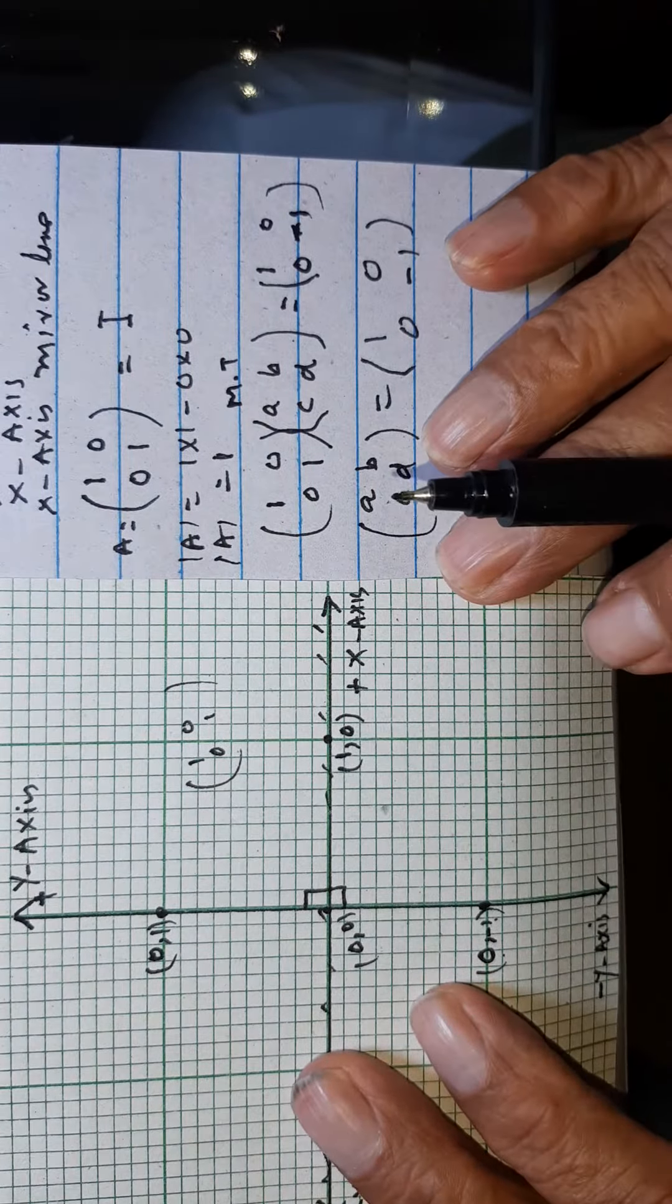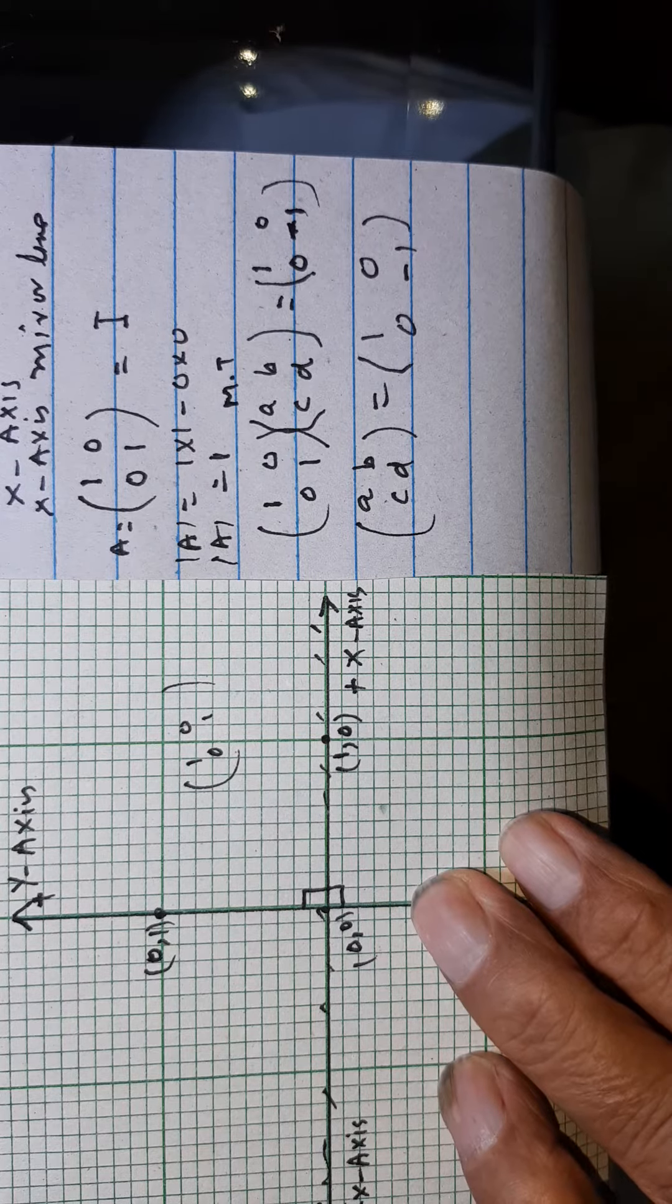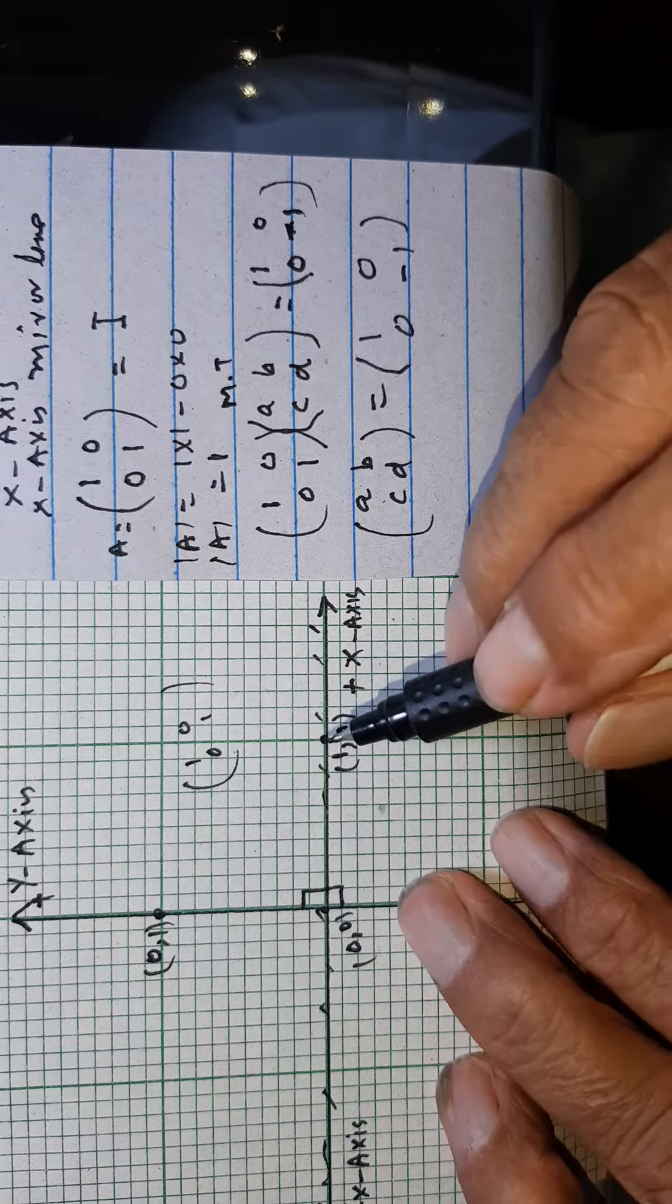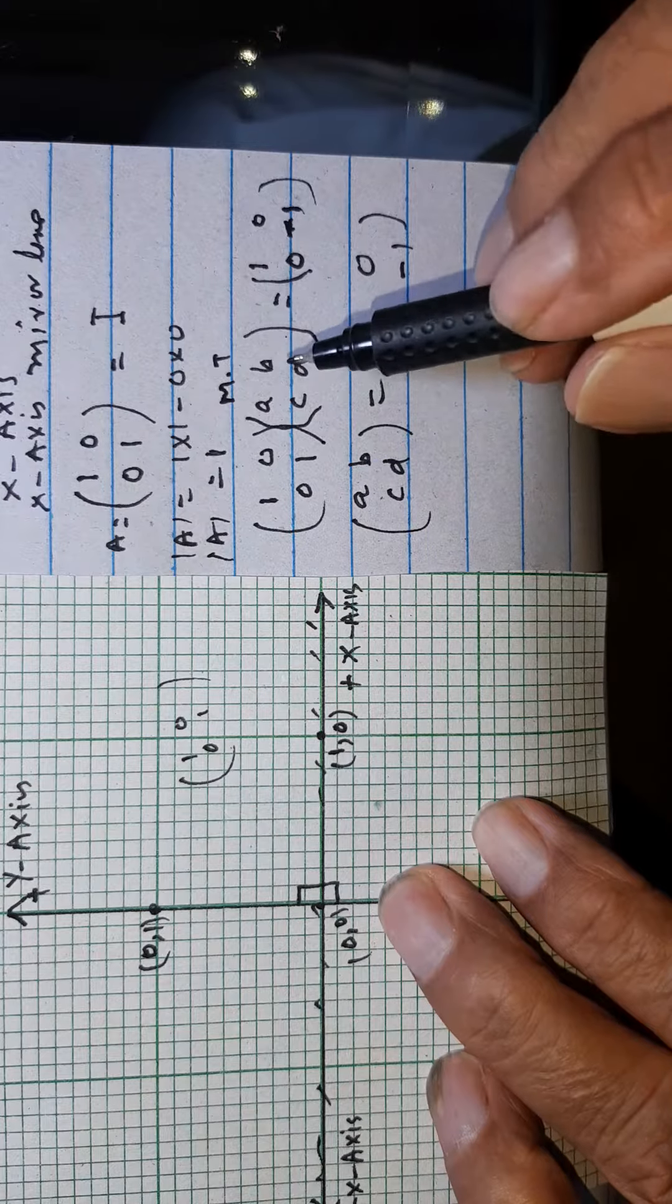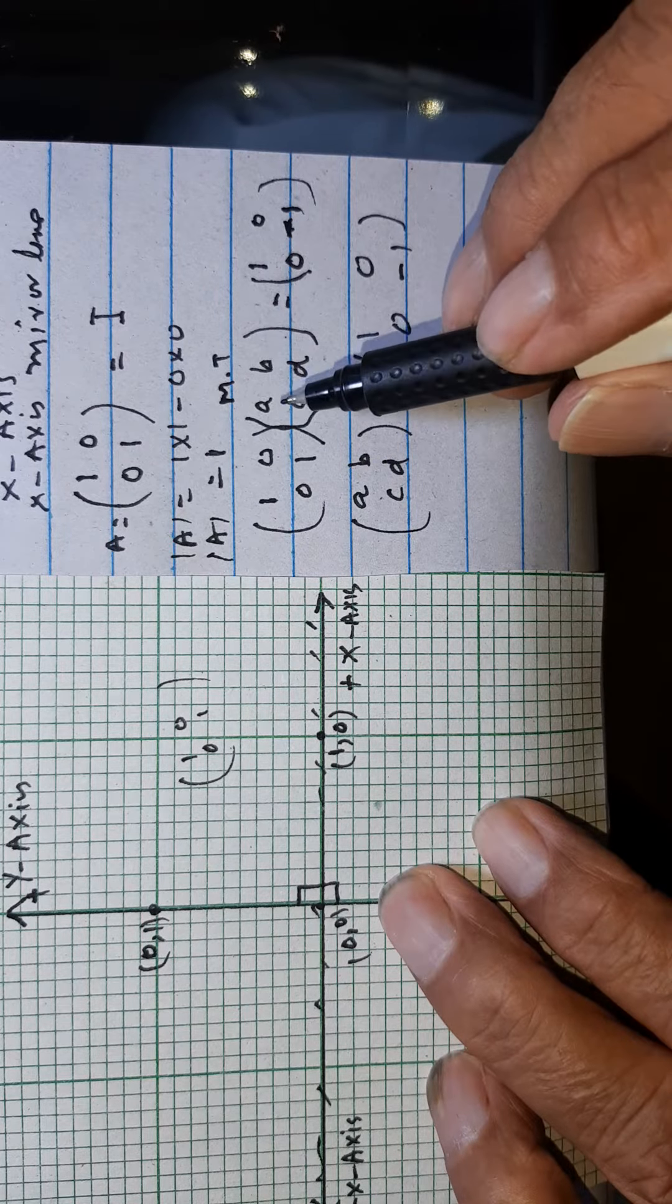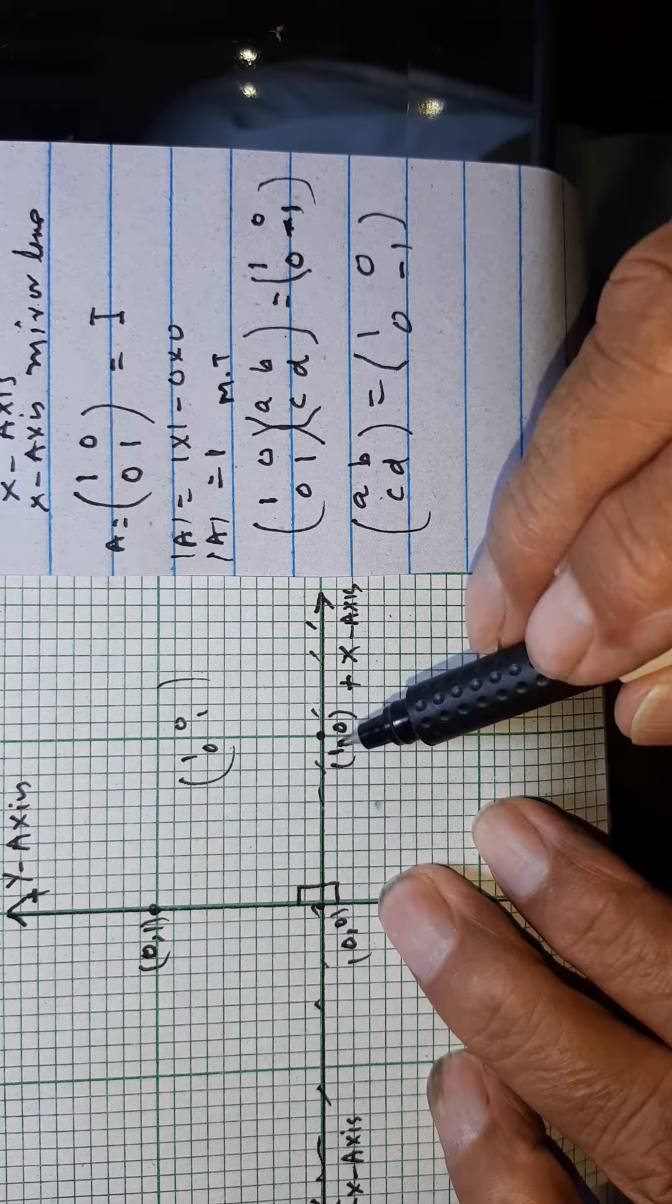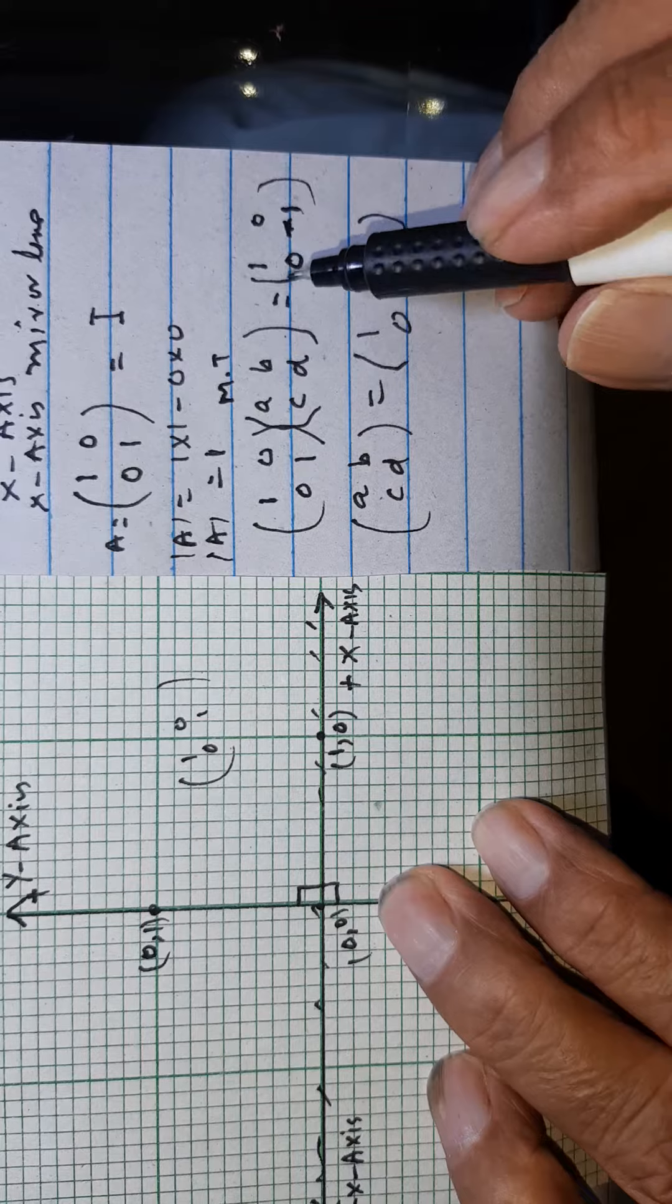That means we take the x-axis as a mirror line. Here 1 0, this is 1 0 and 0 1, these two points. We multiply by the matrix transformation. When x-axis is the mirror line, 1 0 remains as it is 1 0. And here 0 1 comes to, after reflection about x-axis, 0 minus 1.